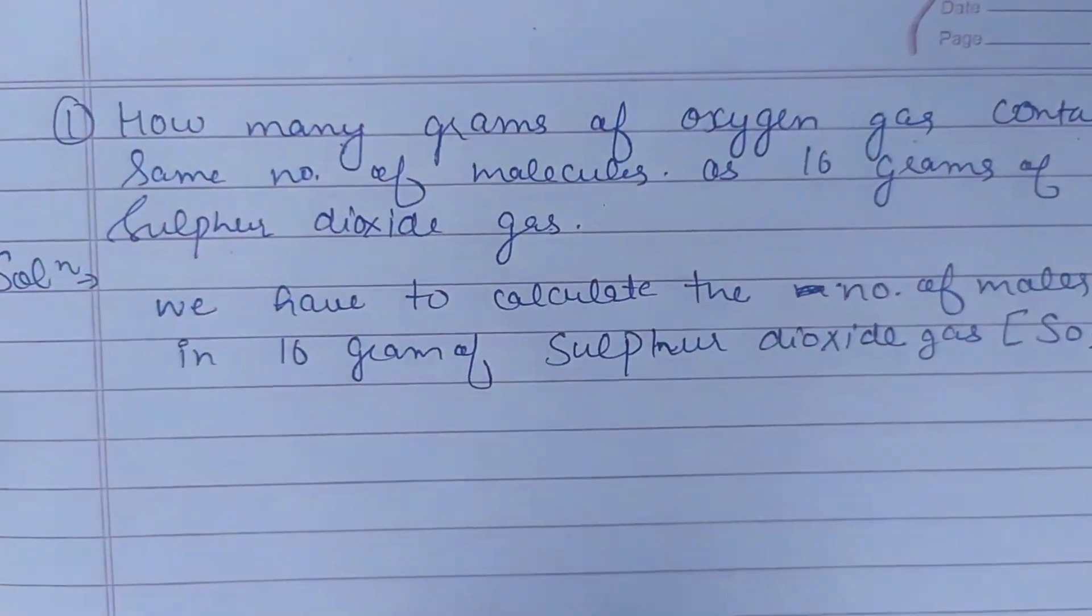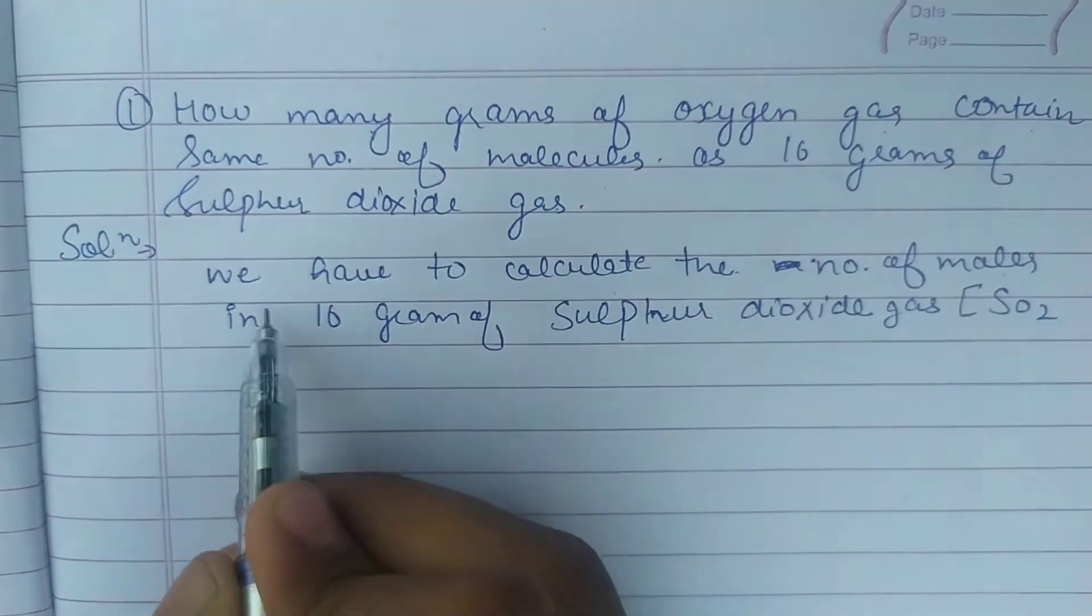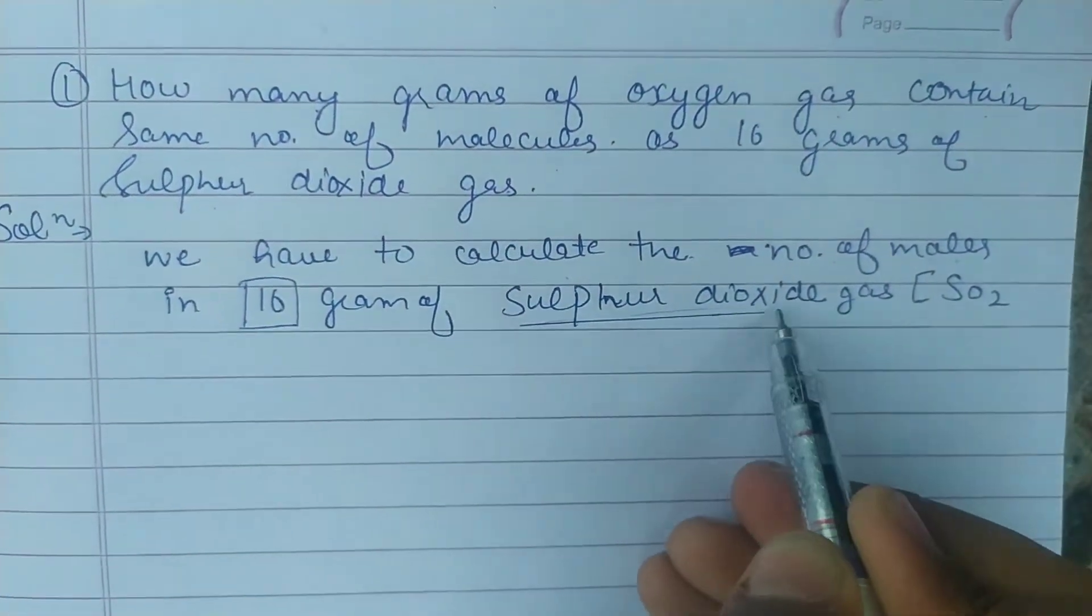So, what do we have to calculate? The number of moles in 16 grams of sulfur dioxide, SO2.